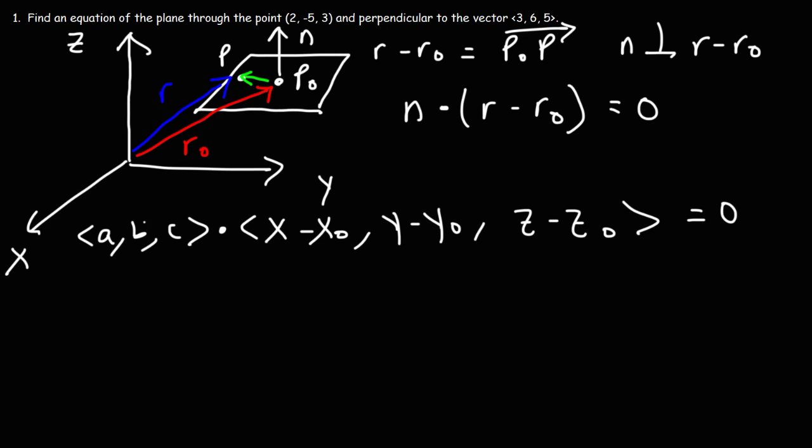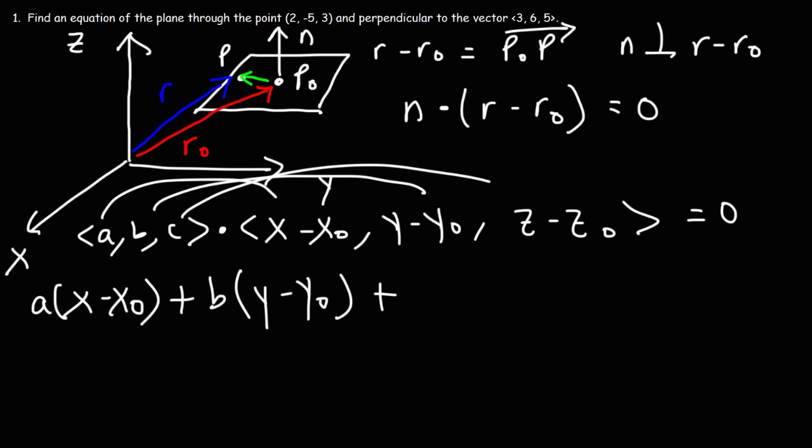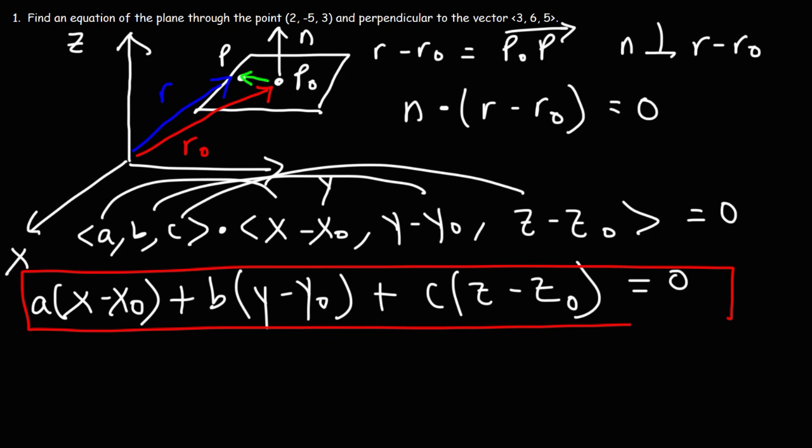So using the dot product formula, we're going to have A times X minus X0, plus B times Y minus Y0, plus C times Z minus Z0. So all of this is going to equal 0. And this is the formula that we're going to use that's going to help us to get the equation of the plane given a point on a plane and the normal vector.